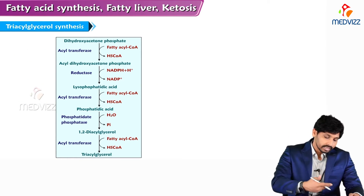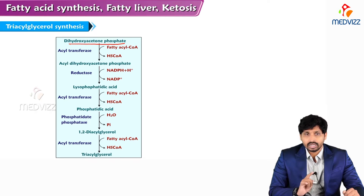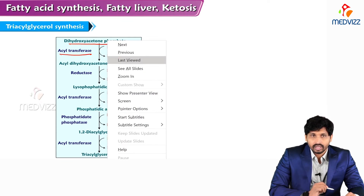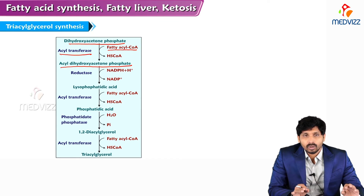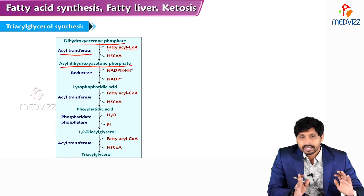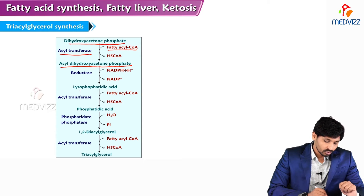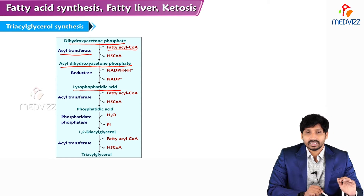In triacylglycerol synthesis, dihydroxyacetone phosphate (DHAP), the intermediate of glycolysis, is acted on by acyltransferase where fatty acyl-CoA donates its acyl group releasing HS-CoA. This converts DHAP to acyl-dihydroxyacetone phosphate. The acyl group from fatty acyl-CoA is accepted by DHAP to form acyl-dihydroxyacetone phosphate, which is then reduced with NADPH+H⁺ to form lysophosphatidic acid.